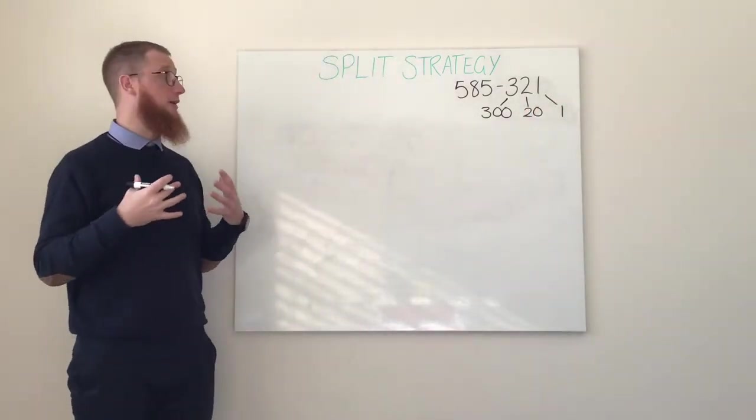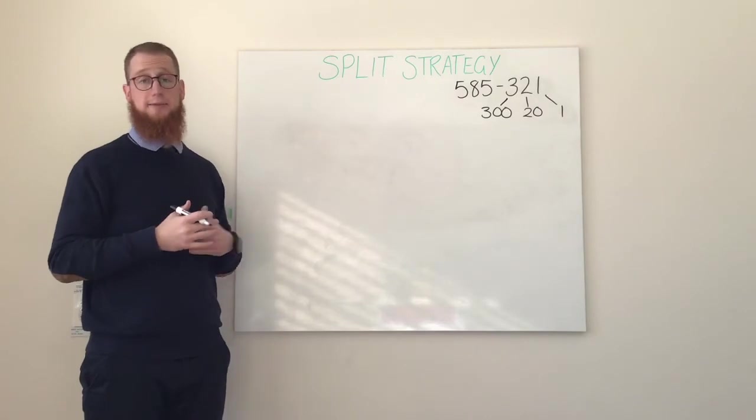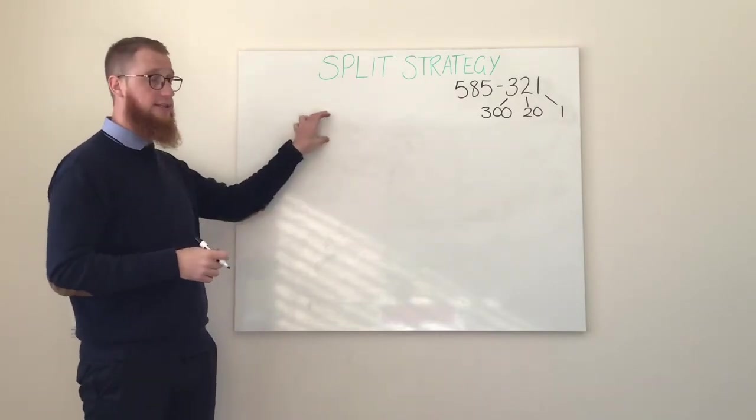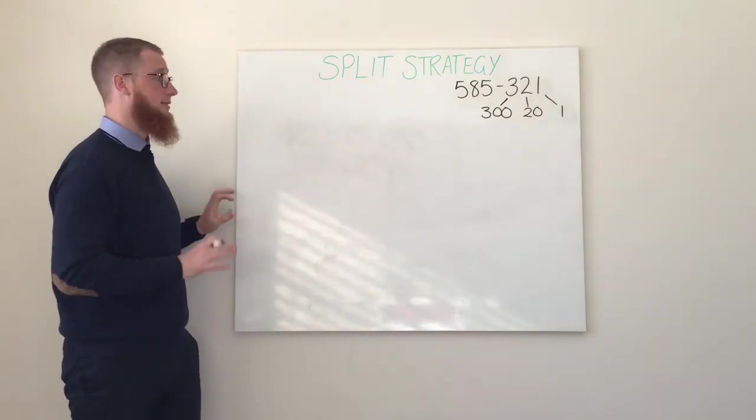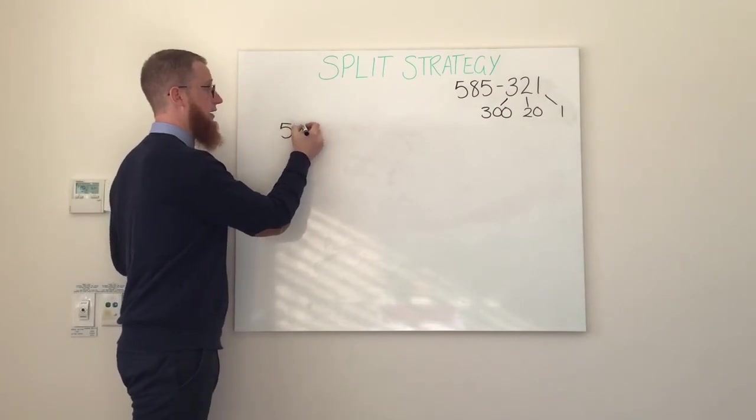Now I know that we are going to have three steps to this equation because we will take away our hundreds, then our tens, then our ones. First step: taking away our hundreds.